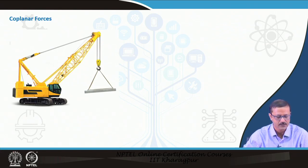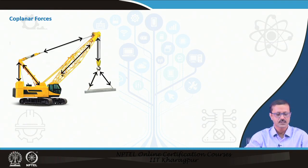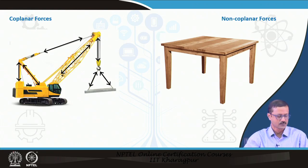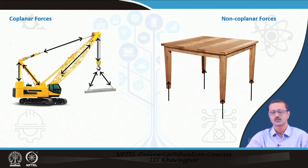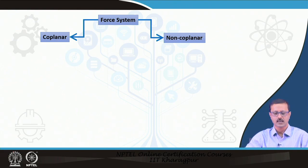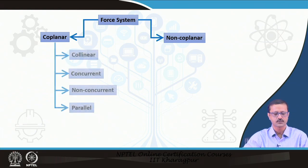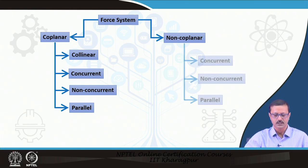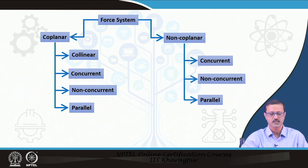In coplanar forces, there are four further classifications: collinear forces, concurrent forces, non-concurrent forces, and parallel forces. Non-coplanar forces have three classifications: concurrent, non-concurrent, and parallel. A crane example illustrates coplanar forces — all cables, booms, and loading arms act in the same plane. A table with four legs illustrates non-coplanar forces — the four leg reactions are not in the same plane.